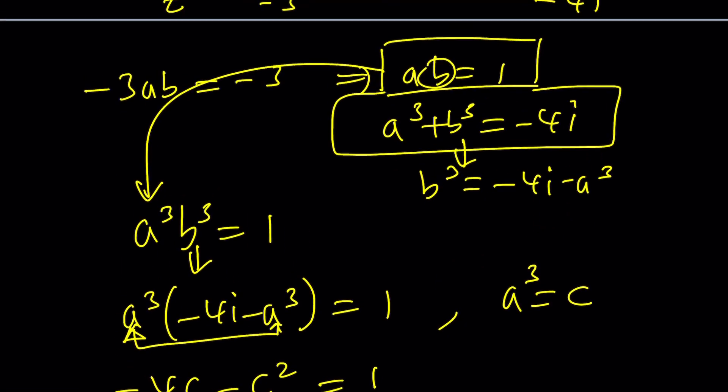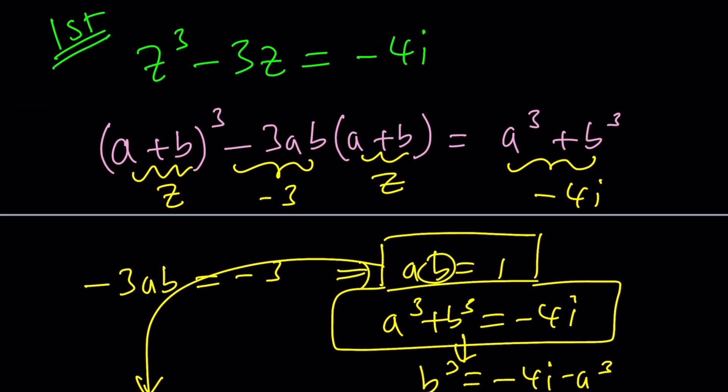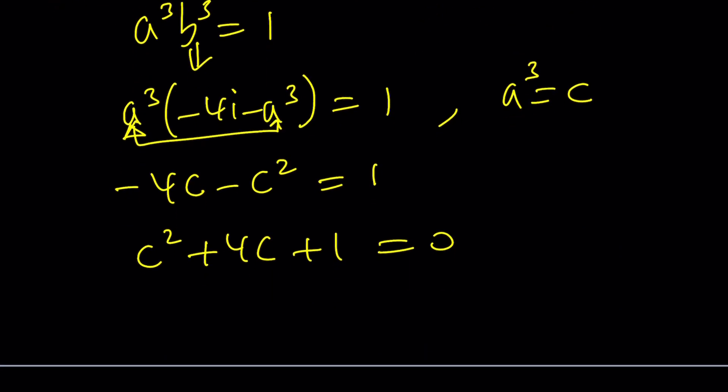From here, we get a quadratic, which is super duper nice. So this is basically reducing the power. But notice that one thing actually has been particularly nice, we did not have z squared in this equation. So it was already a depressed cubic.